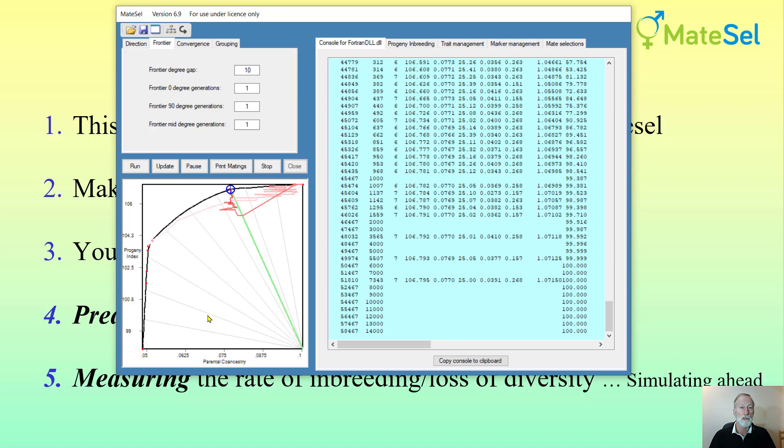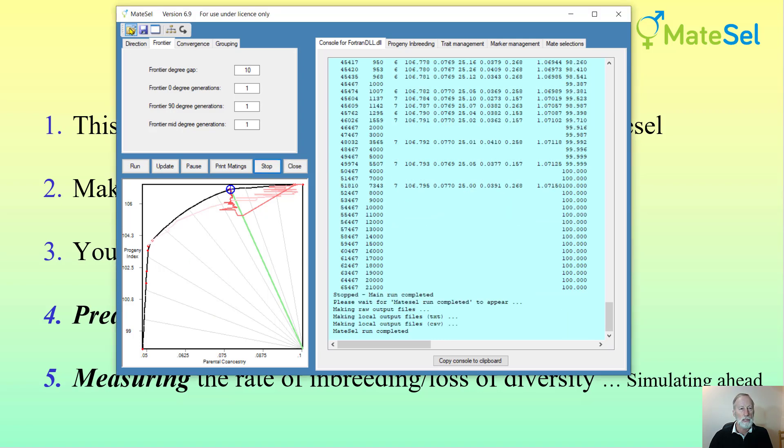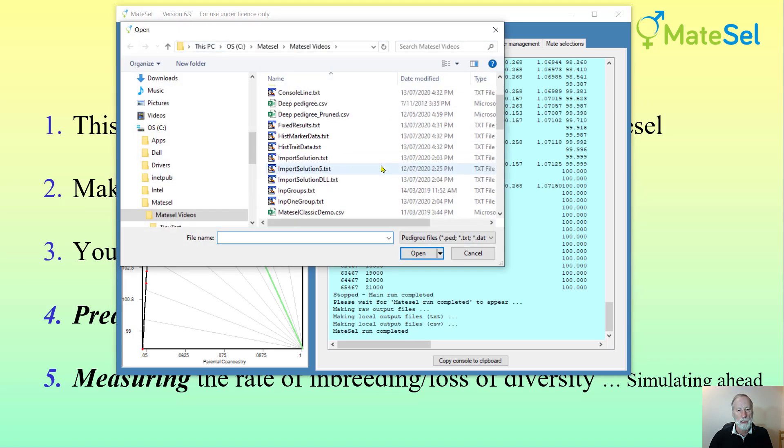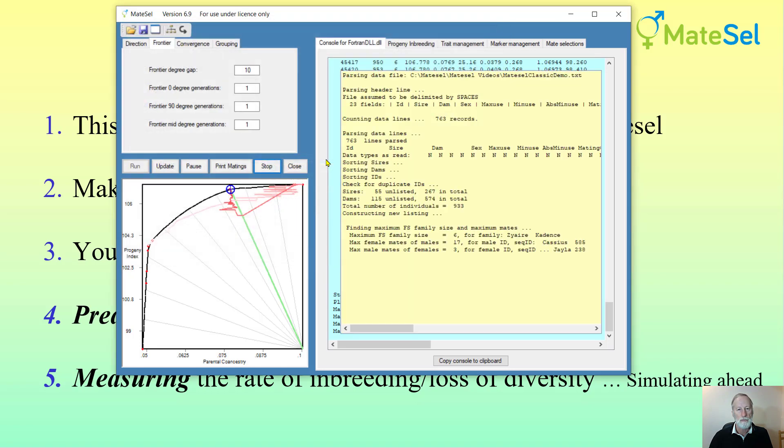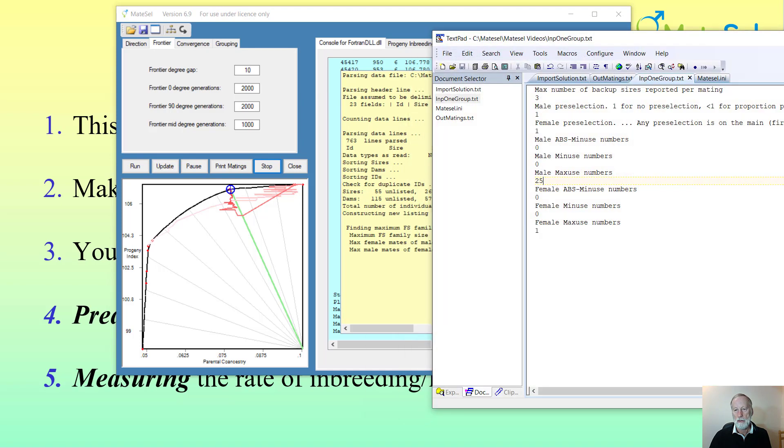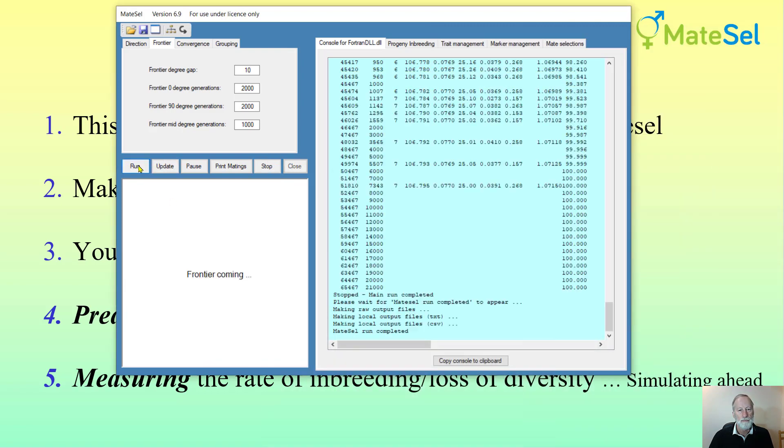Now I want to make a different point. I'll reopen the MateSel classic demo file. What I want to illustrate is that you should not second-guess what's best to do and put in constraints on maximum use, for example, which might be something you find in a textbook about what's good for your species, like the maximum number of matings to give to a male.